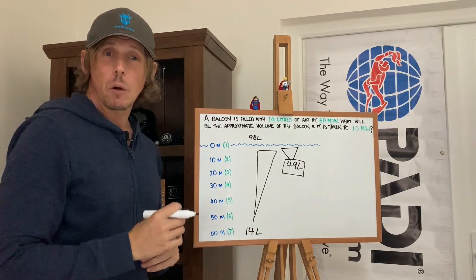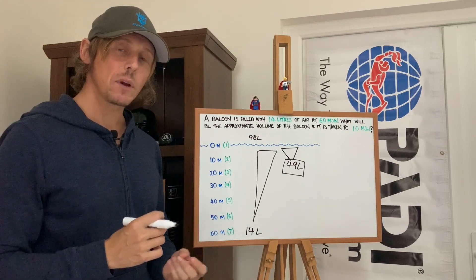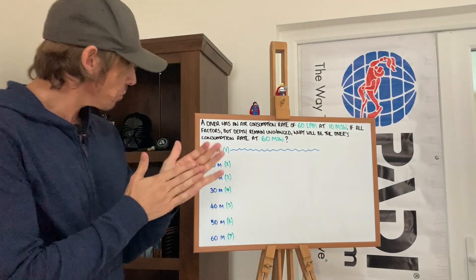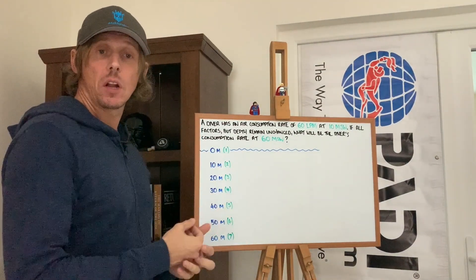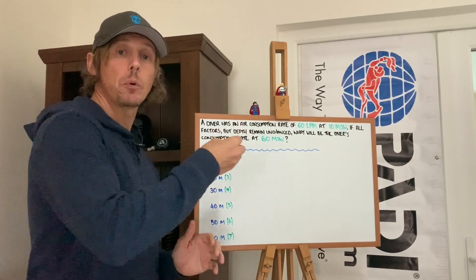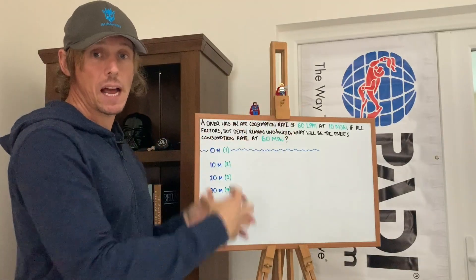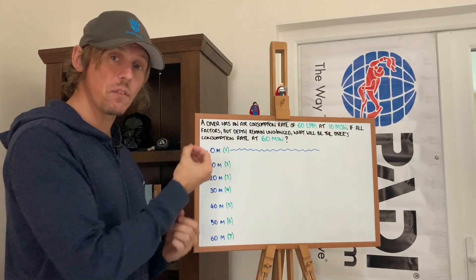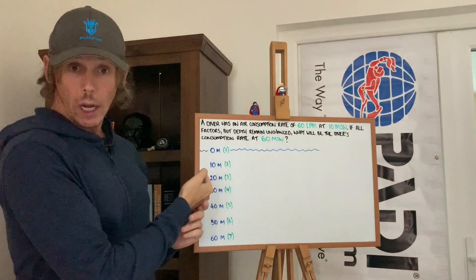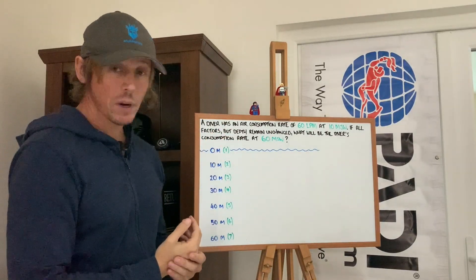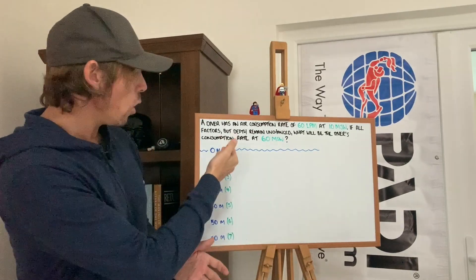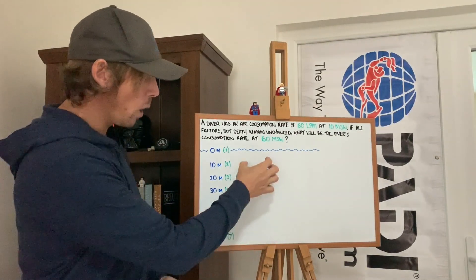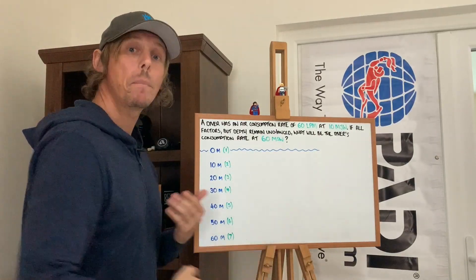Now we're going to do a different style of question that falls under the same category — to do with rates of breathing. We're going to use the same methodology but apply it to a diver's breathing rate. In the previous questions we looked at how a volume of gas expands and compresses as pressure changes. Now we've got to flip that on its head. The question: a diver has an air consumption rate of 60 liters per minute at 10 meters of seawater. If all factors but depth remain unchanged, what will be the diver's new consumption rate at 60 meters?